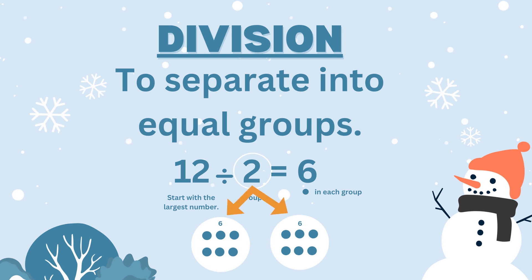I made two groups — that's why I have two white circles. I'm going to share the tiny blue dots with each circle. Make sure that each circle has the same number of blue dots. In this case, each circle has six blue dots. Therefore, 12 divided by two equals six.